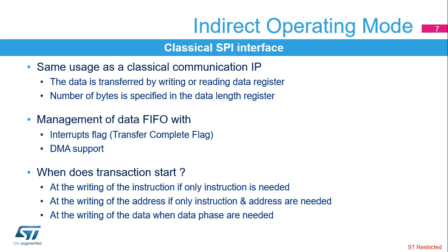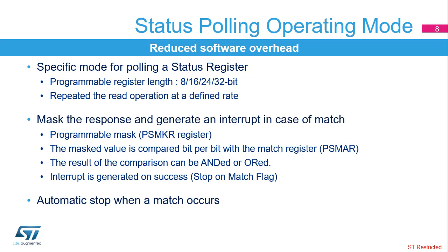In indirect operating mode, the OctoSPI behaves like a classical SPI interface. Transferred data goes through the data register via FIFO. Data exchange is driven by software or by the DMA, using related interrupt flags in the OctoSPI status registers. Each command is launched by the writing of an instruction, address, or data depending on the instruction context. A specific mode has been implemented in the OctoSPI interface to autonomously poll status registers in the external flash.